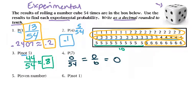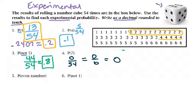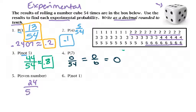For the probability of getting an even number, look at all your results and find how many even numbers — all the 2s, 4s, and 6s — you have. Pause the video, count them up, and do numbers 5 and 6. When I counted, I got 24 even numbers out of 54. That comes out to 0.4 repeating, and rounded to the nearest tenth that's 0.4.